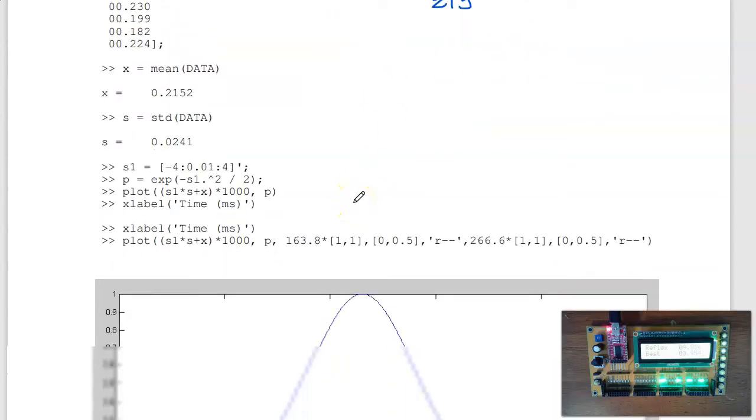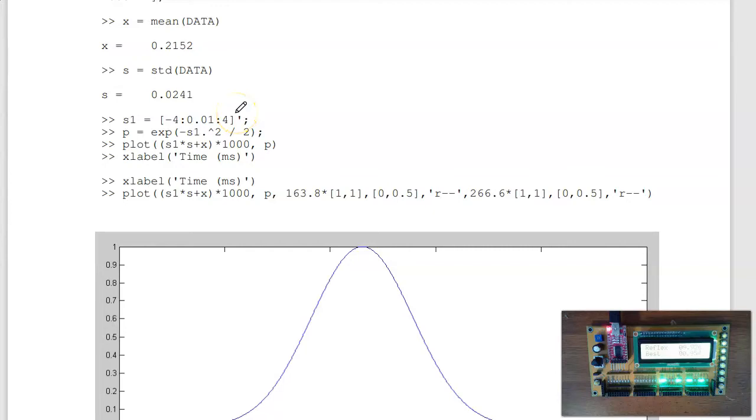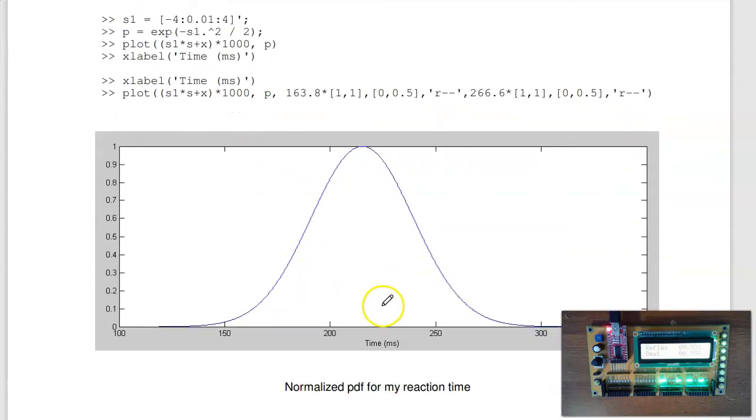I can plot that more accurately in MATLAB. So let's go from minus four to plus four standard deviations. The normalized probability is e to the minus s squared over two. Plot my standard deviations scaled by the actual standard deviations, shifted by the mean, times a thousand to make the units in milliseconds. Here's my reaction time. Now we can start analyzing it. To analyze it, I use t-test.